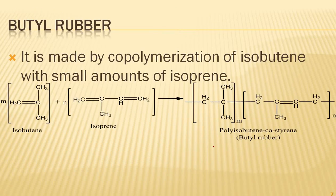The next rubber is butyl rubber, made by the copolymerization of isobutene with small amounts of isoprene. The natural rubber monomer unit is isoprene, also called 2-methyl-1,3-butadiene — this is very important to remember. When isoprene is combined with isobutene, you get polyisobutene-co-isoprene, also called butyl rubber.